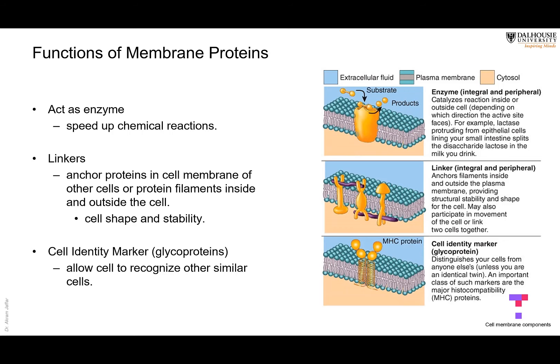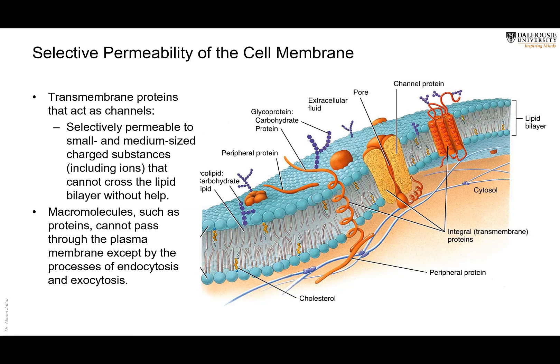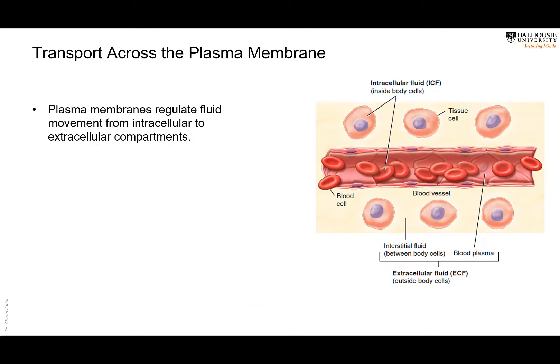The membrane allows some substances to pass through while preventing others — it is selectively permeable. Some substances like oxygen, CO2, and water are small enough to pass through the lipid bilayer by simple diffusion. But the membrane is impermeable to ions, polar molecules, and large molecules — they will not be able to pass through the lipid bilayer and need proteins to carry or transport them. So selective permeability is established better through the use of membrane proteins.